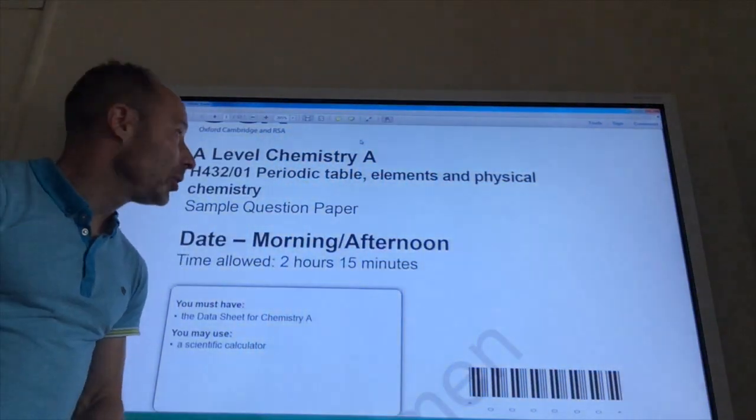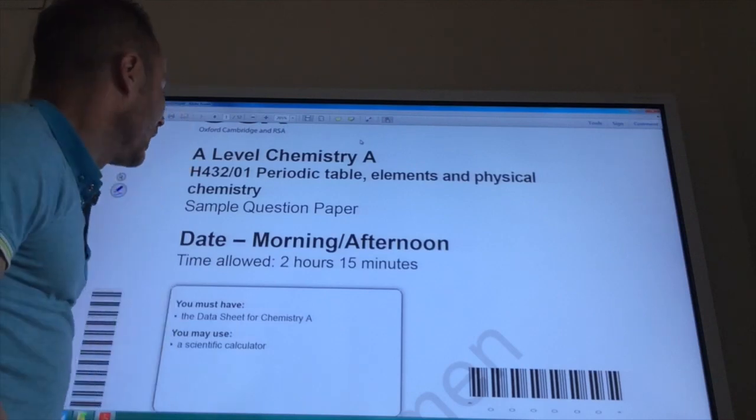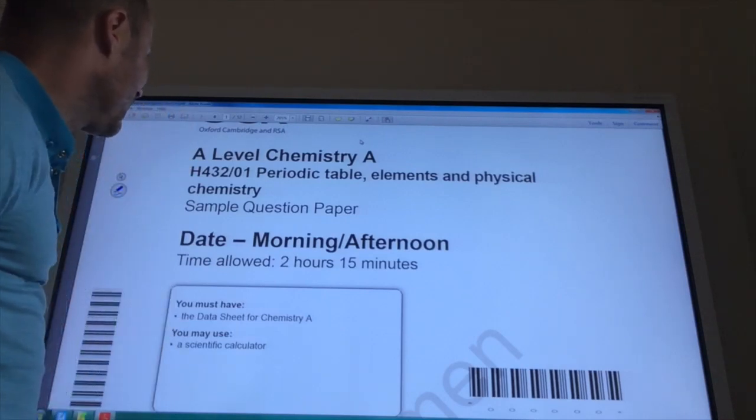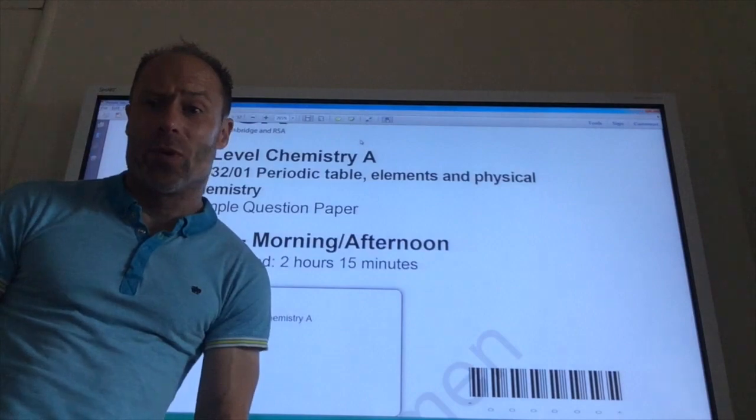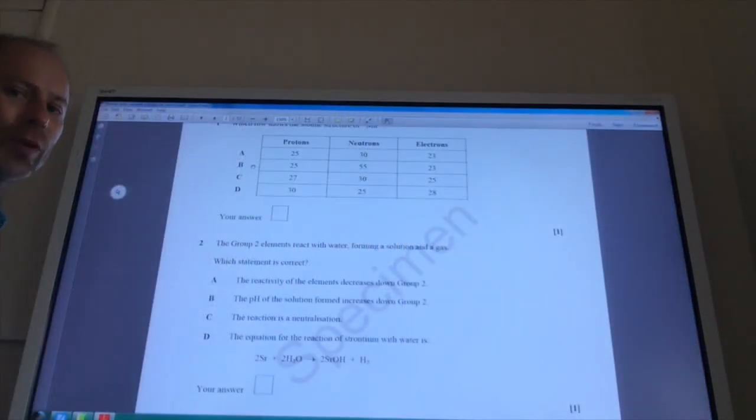Okay, welcome along. We are going to do the specimen paper for the A2 set of exams now. And we're going to start off with paper 1 which is the periodic table elements and physical chemistry. So let's kick off with the multiple choice.